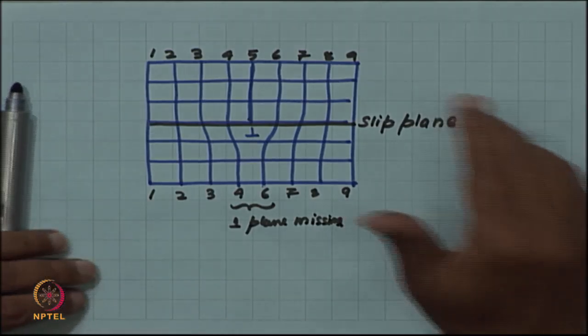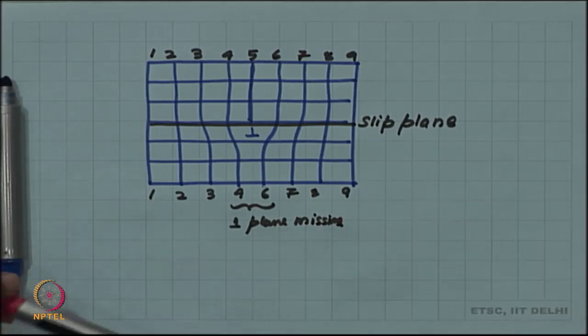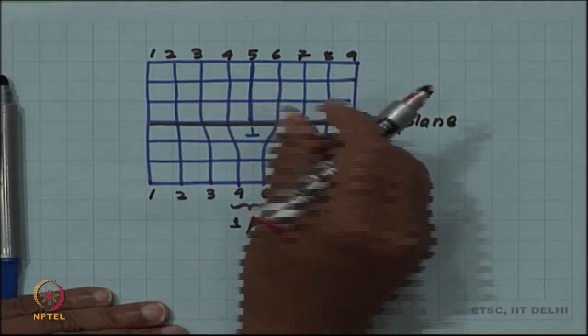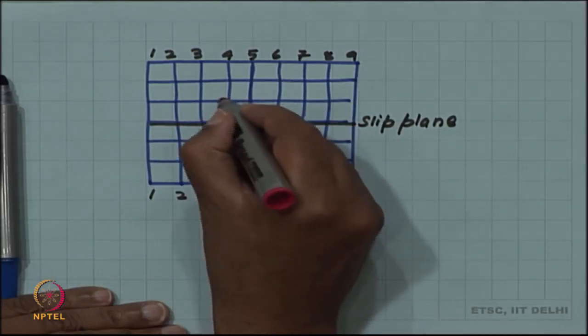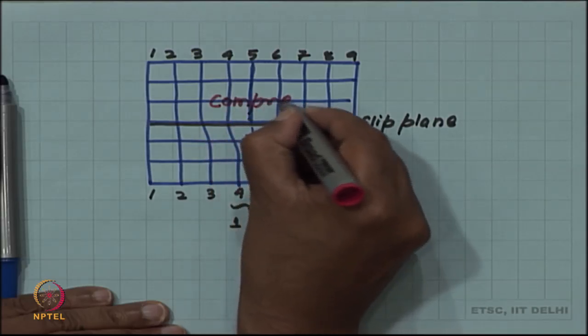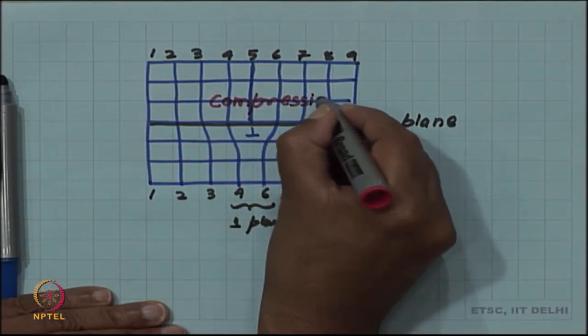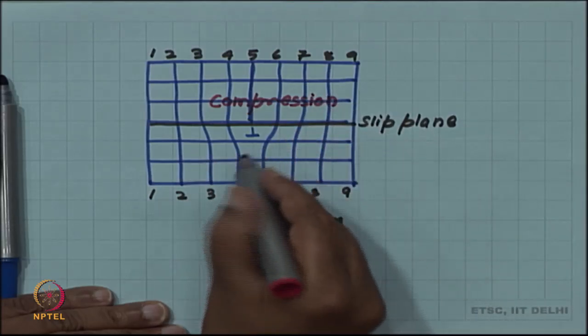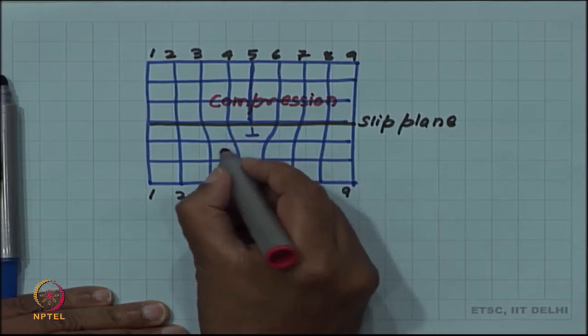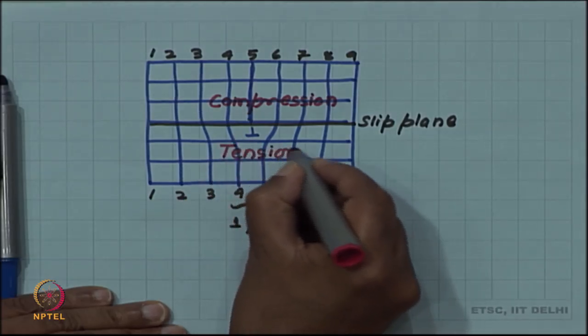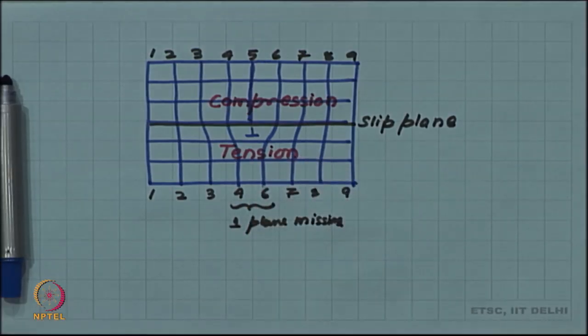This leads to - intuitively we can feel that the planes above will be squeezed in. There will be a compressive stress field here, there will be compression, whereas the planes will be further apart below the slip plane. Below the slip plane there will be tension. Above the slip plane there is compression and below the slip plane there is tension.